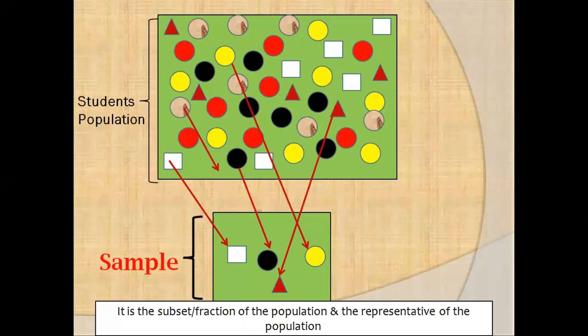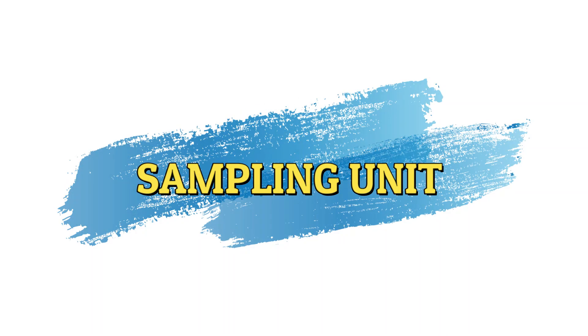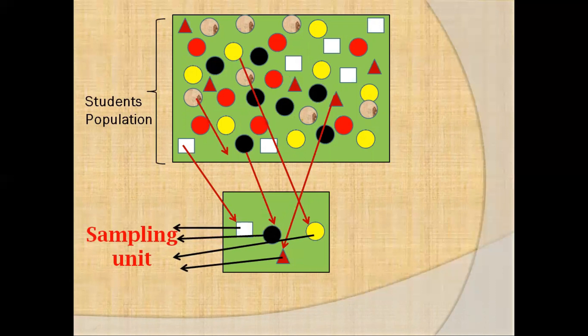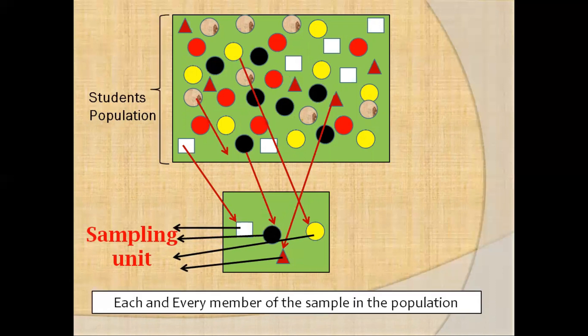Next we will see or try to understand what is a sampling unit. Similarly, from the students of our population of 1,000, 100 will be selected as the sample. So within the sample, when you consider each and every element or individual of the sample in the population, then we are referring to the sampling unit. That is all the students, all the students one by one right from 1 to 100 constitute the sampling unit.